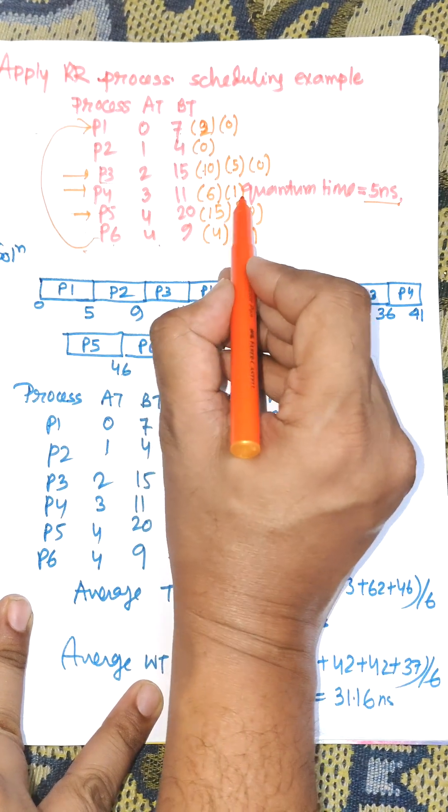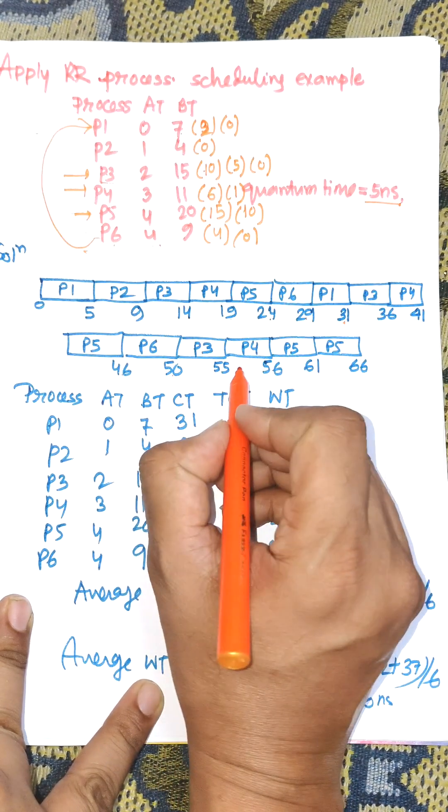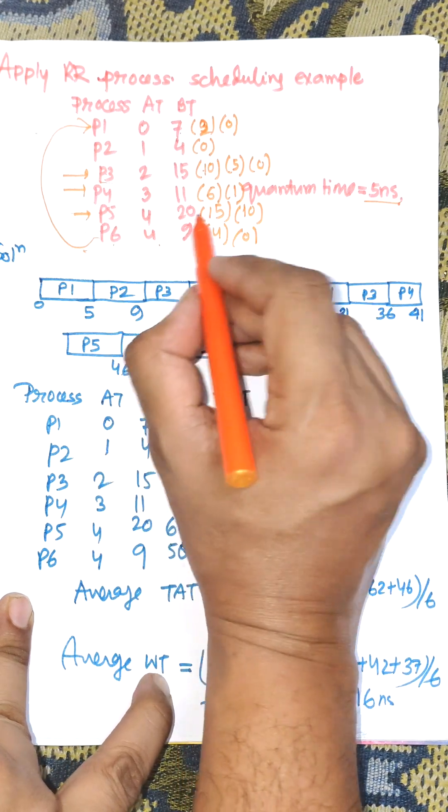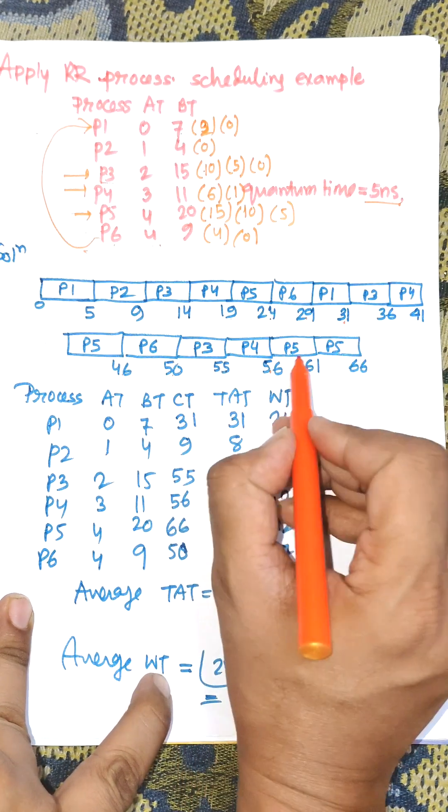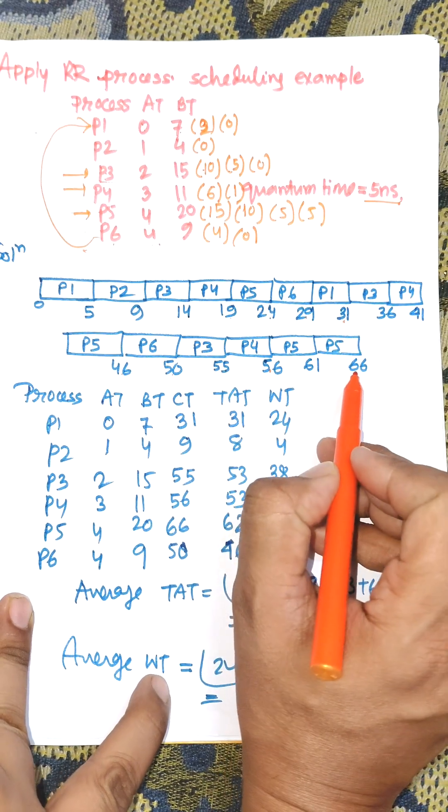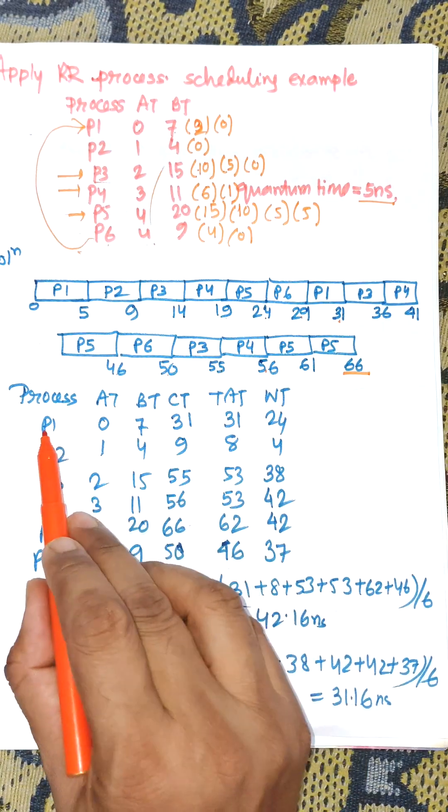Control goes to P4, with only 1 nanosecond remaining. P4 finishes execution at time 56. Then control goes to P5 with remaining time 5, and again P5 is selected. Total execution time is 66.